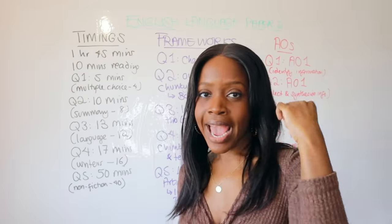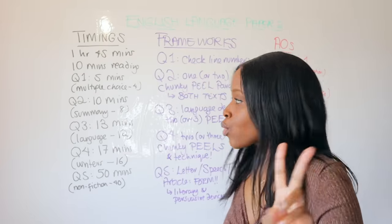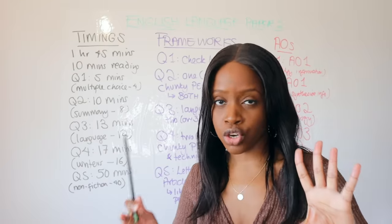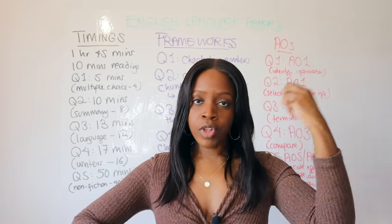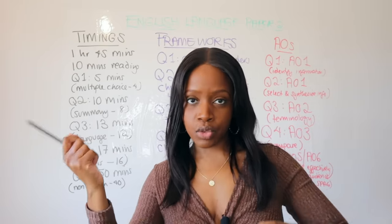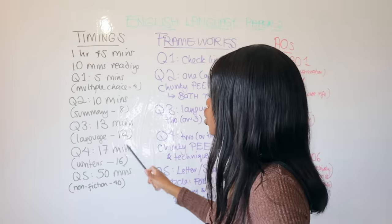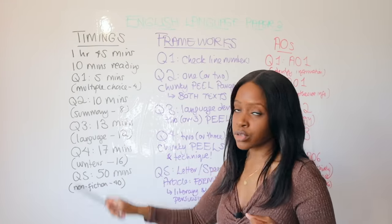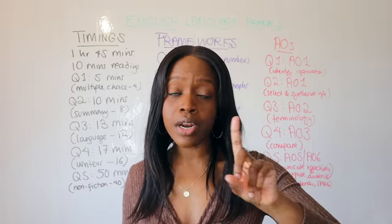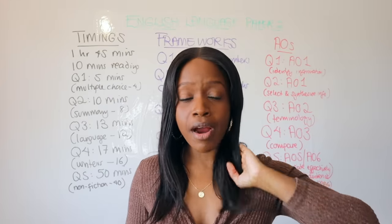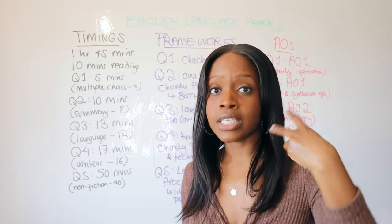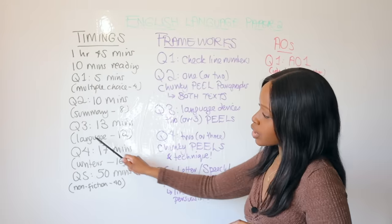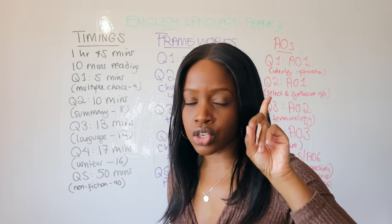For Question One, the multiple choice question worth just four marks, spend a maximum of five minutes and then move on — it asks you to look at Source A at specific line numbers. Question Two is your first comparison question, asking you to write a summary of either similarities or differences between the two texts. It's worth eight marks, so spend 10 minutes on it.